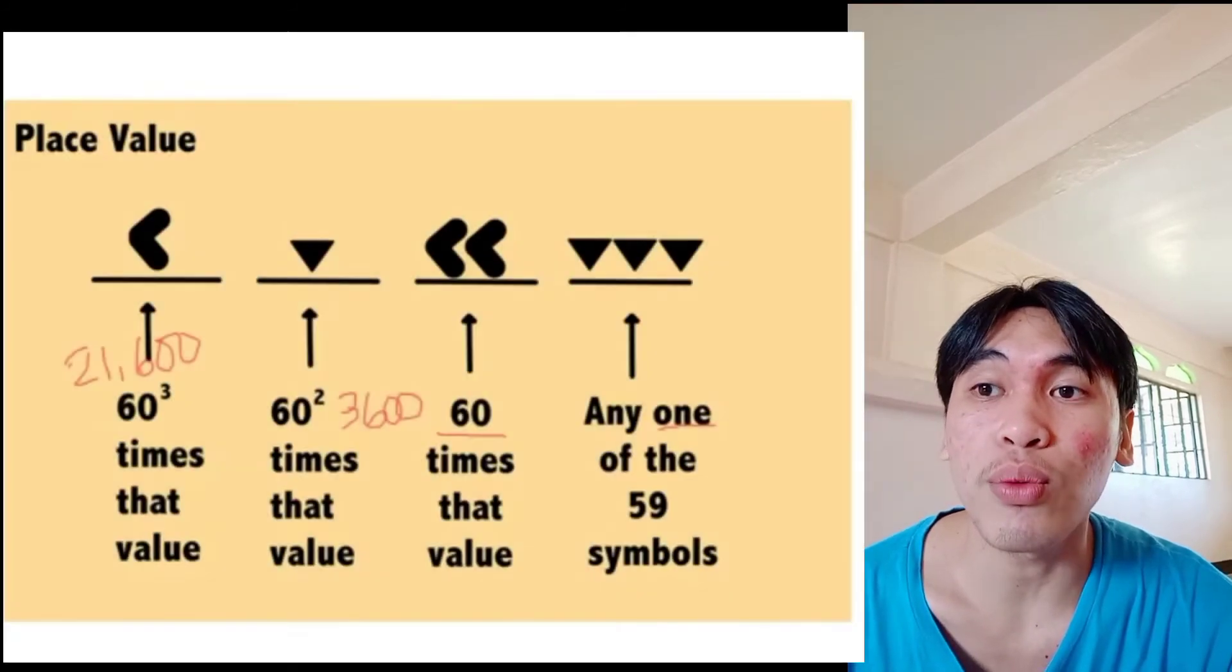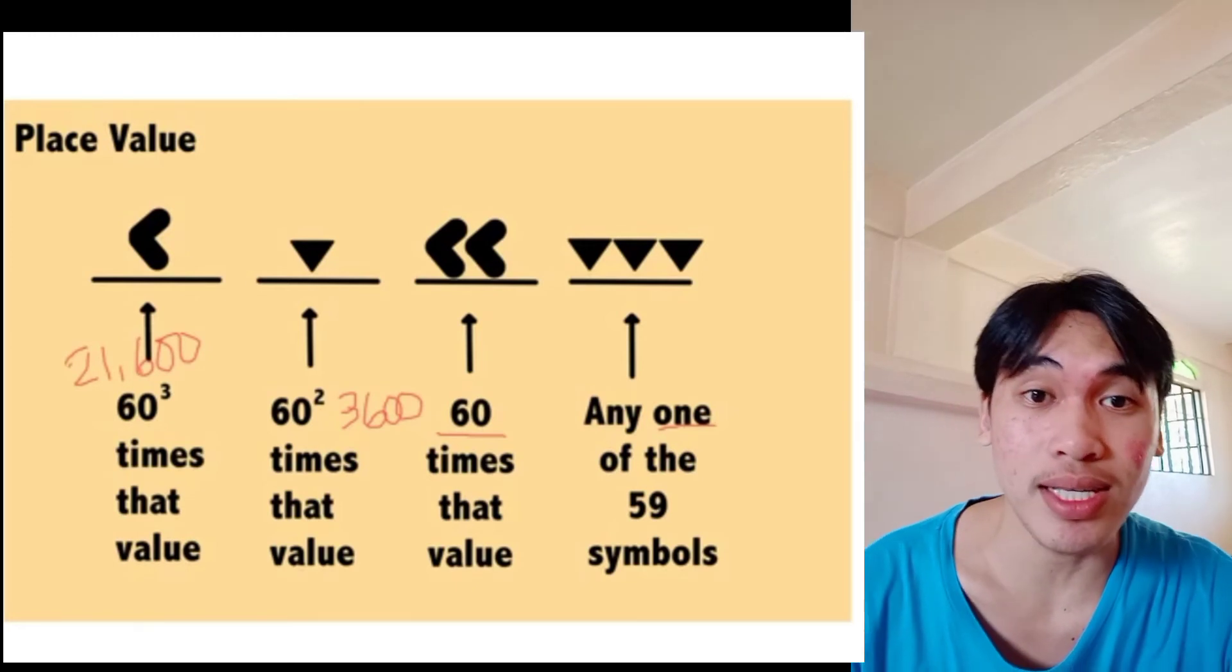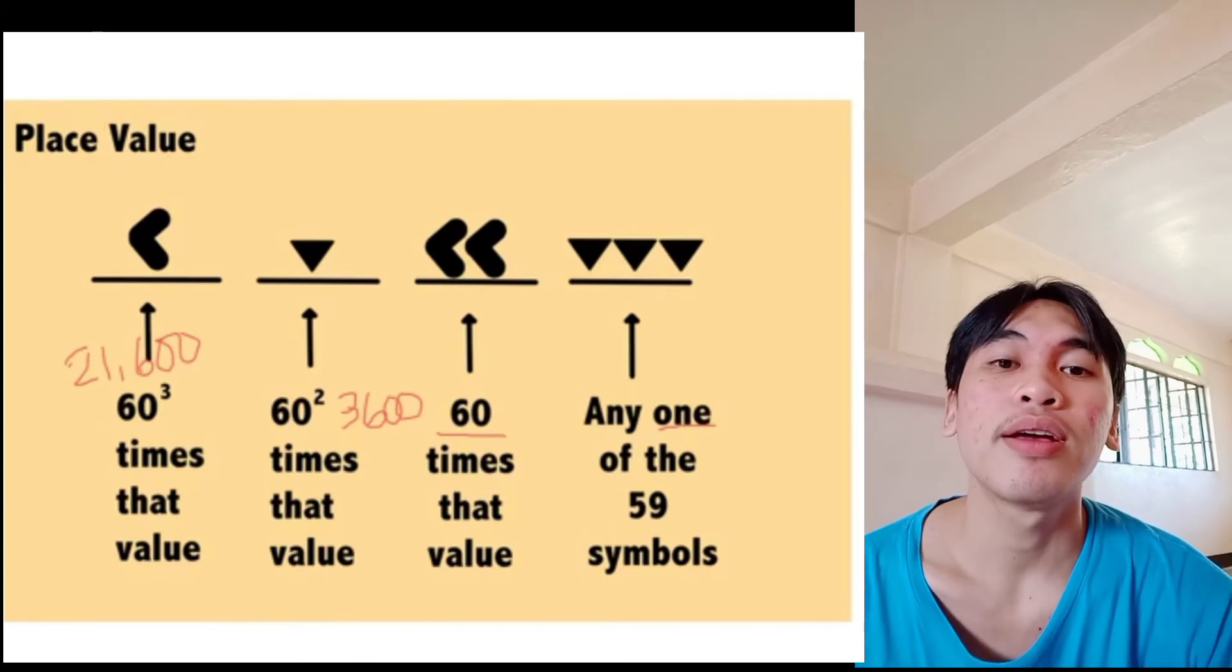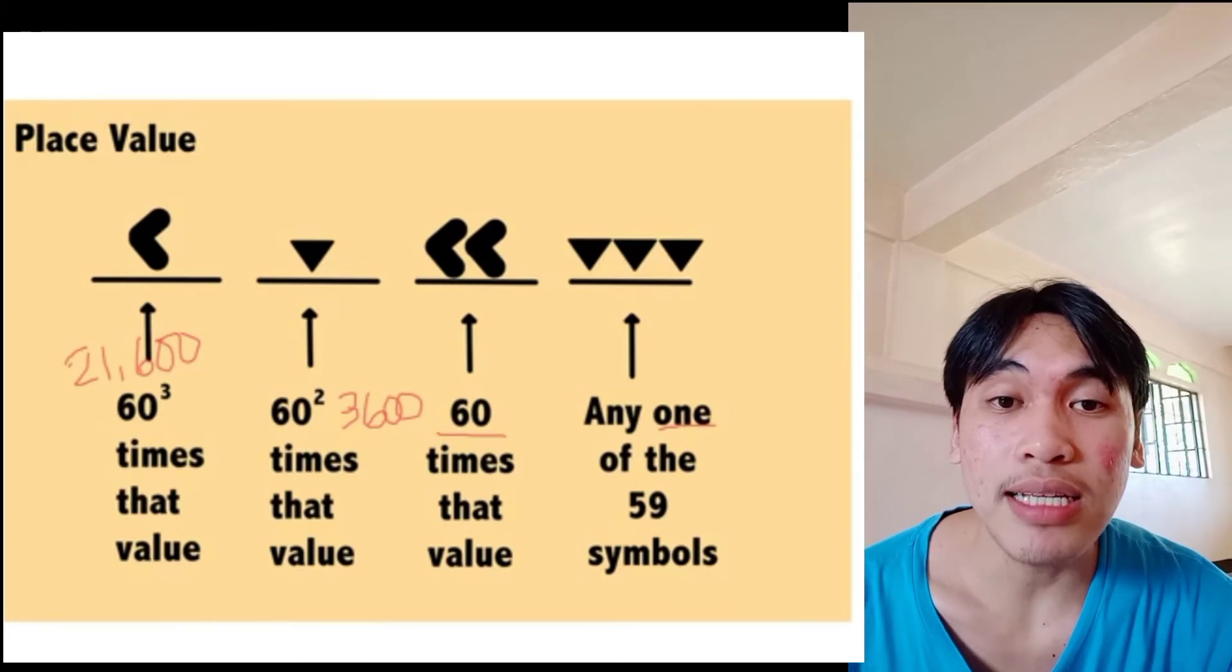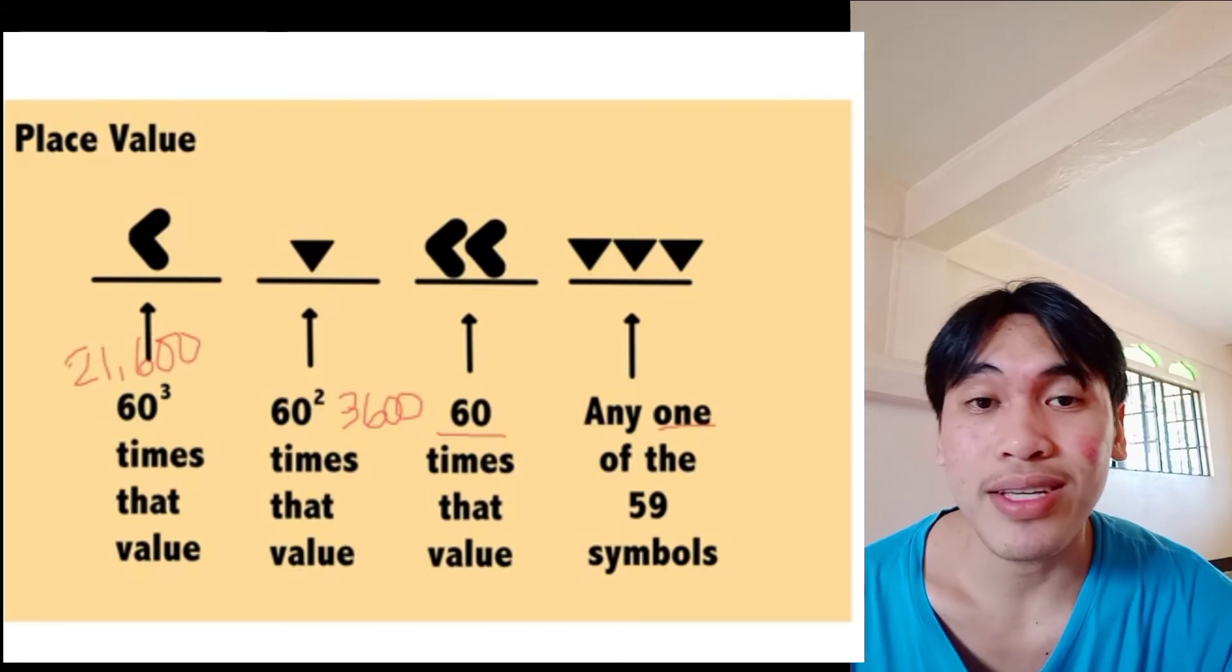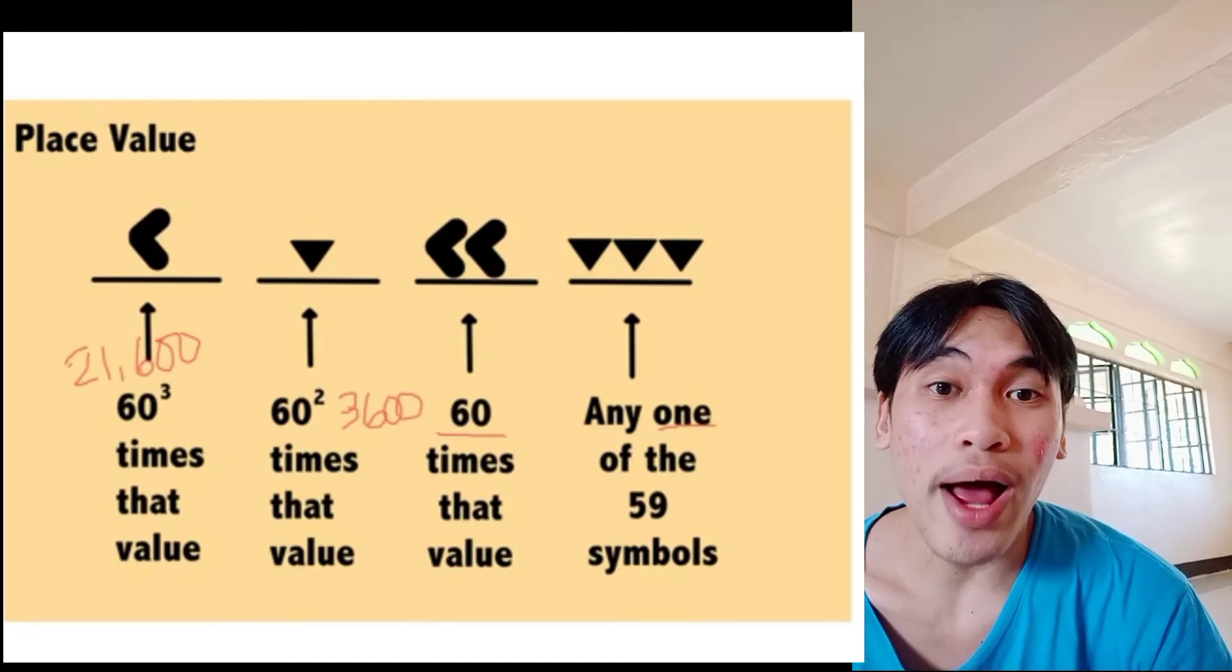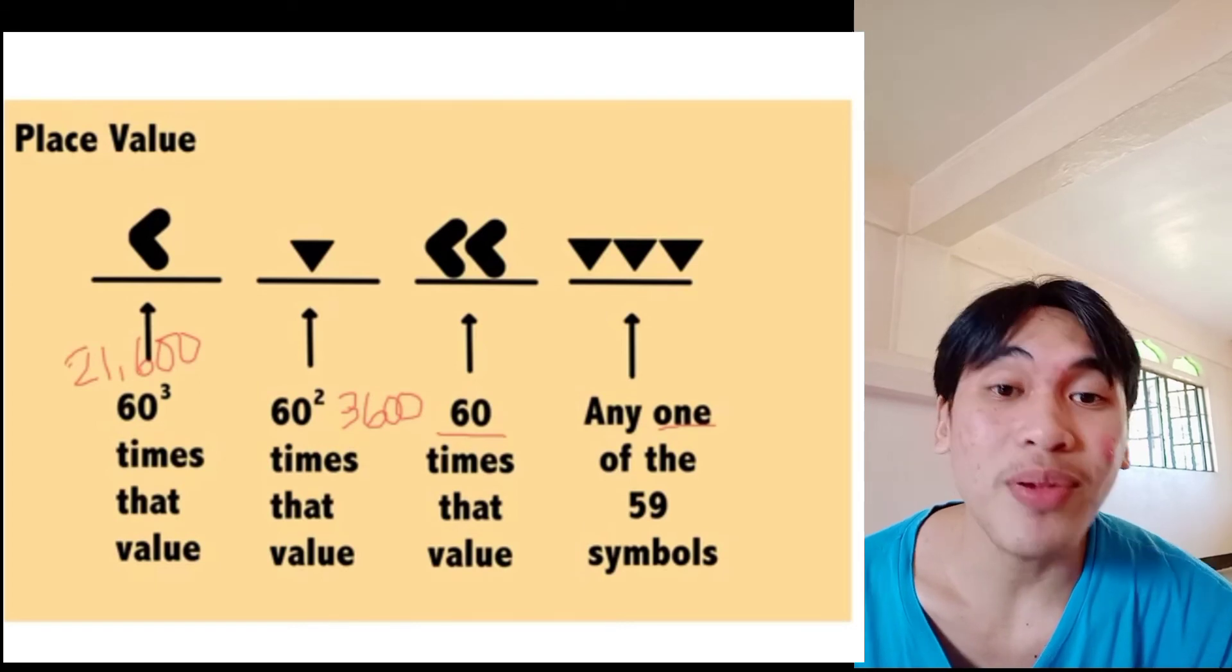Another is 1 triangle downwards. It is 60 times 60, I think 3,600. And the last is 60 times 60 times 60, it is 21,600. We are writing from the right to left, not in our numerical, not in our alphabet, yet left to right.